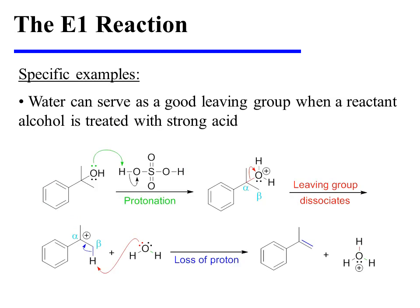Water can also serve as a good leaving group when a reactant alcohol is treated with strong acid. In this specific example, the benzylic alcohol is protonated by sulfuric acid. Water then dissociates, the benzylic carbocation that is produced loses a proton, and that yields the alkene product.